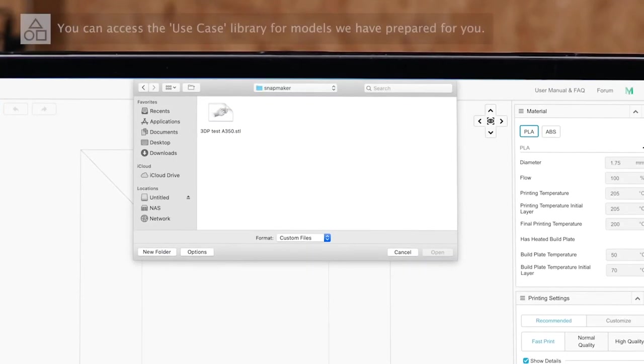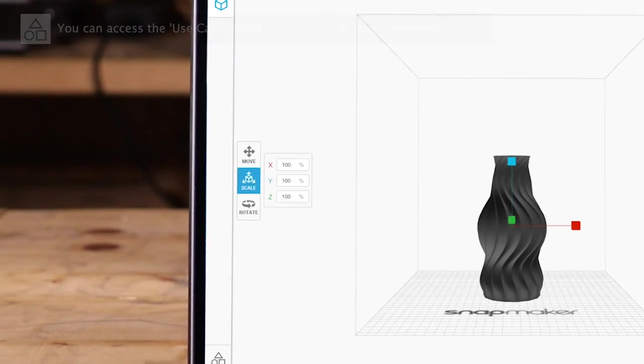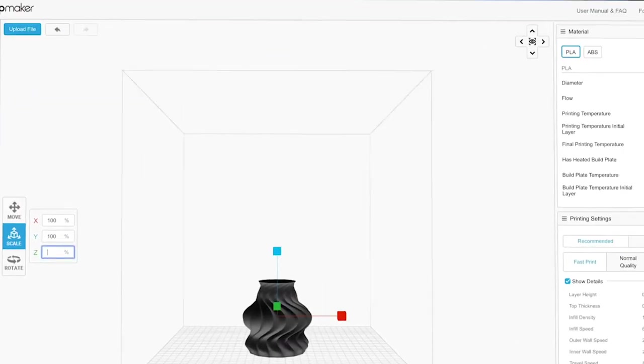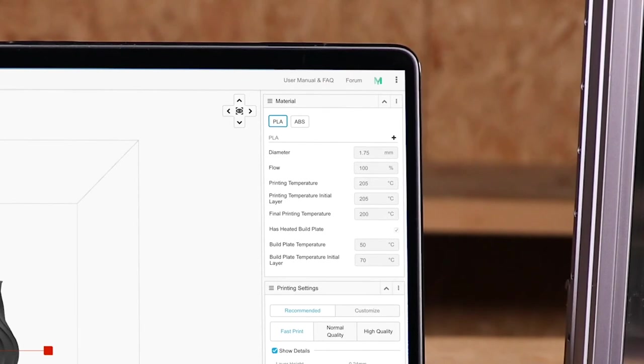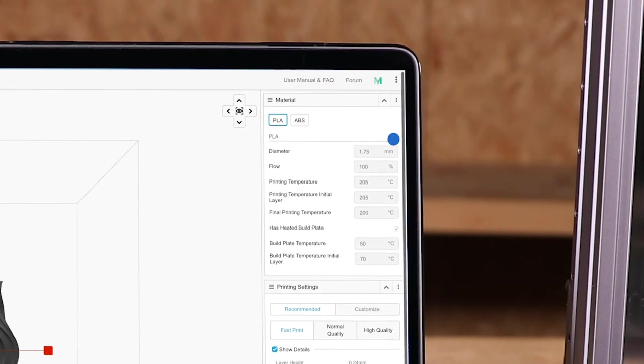Upload a model file in STL or OBJ format. You can move, rotate the model and adjust its position. And choose a printing material to use the default settings. Or click the plus button to add and edit a new material profile.